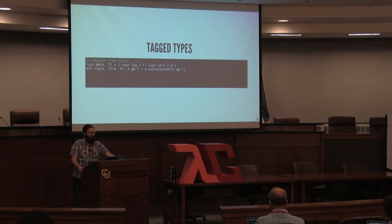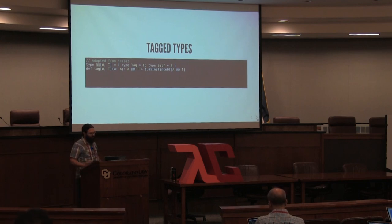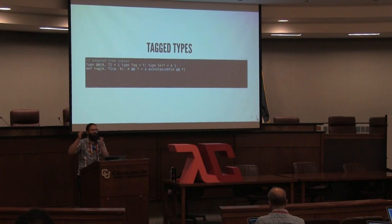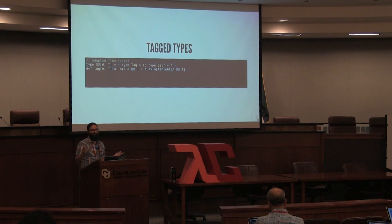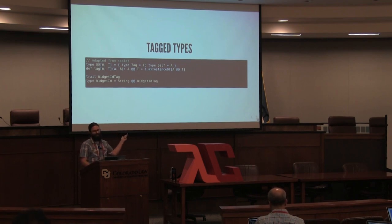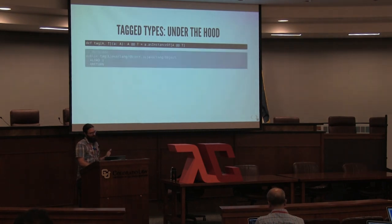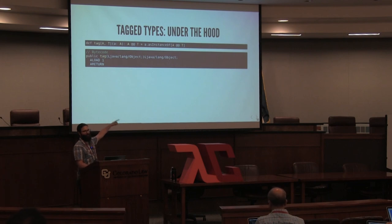Tag types were the first approach I saw to solve this problem, adapted from Scalaz. The idea: you have some type `A` tagged with type `T`, implemented as a refinement type. It becomes `java.lang.Object` at runtime, but the inner types `Tag` and `Self` don't appear in the compiled bytecode. The `tag` function just does `asInstanceOf` — we're casting to `Object`, but `scalac` remembers you want it tagged with `T`. In bytecode, the `tag` function is just a load-and-return — exactly the kind of thing the JIT can inline.